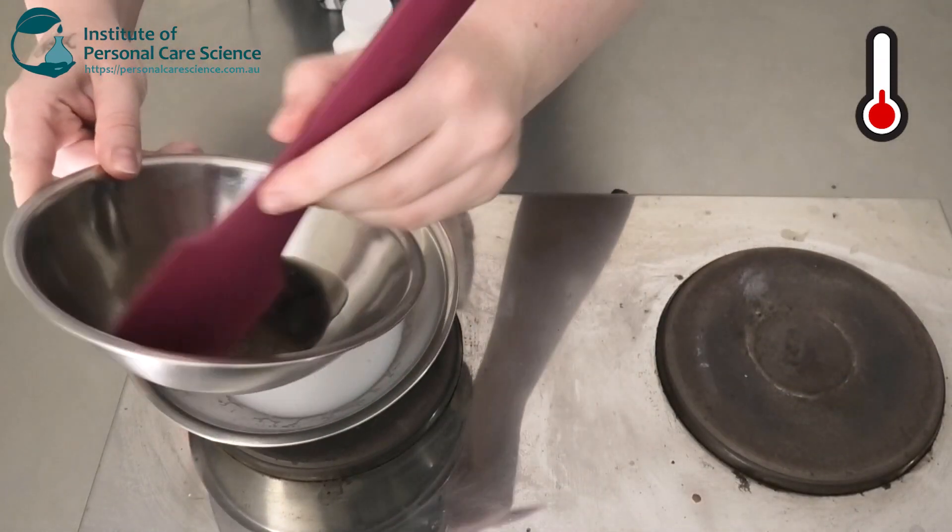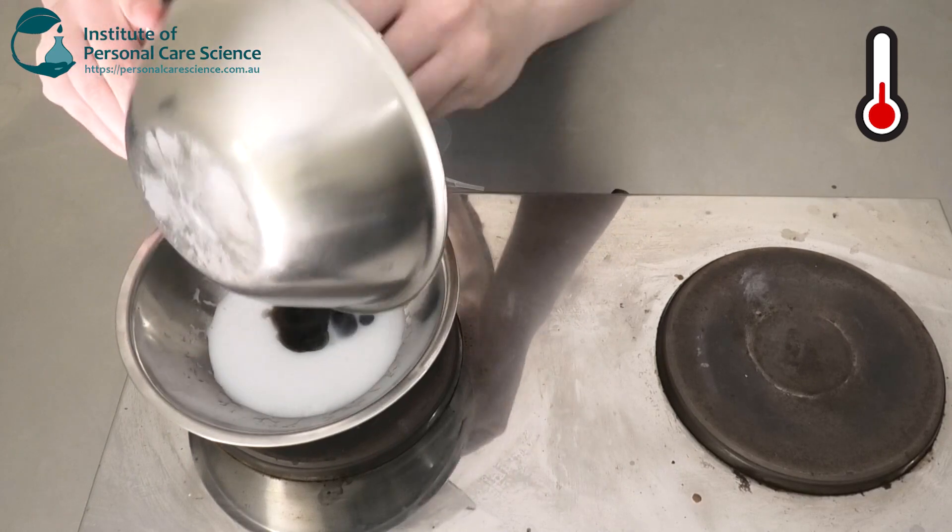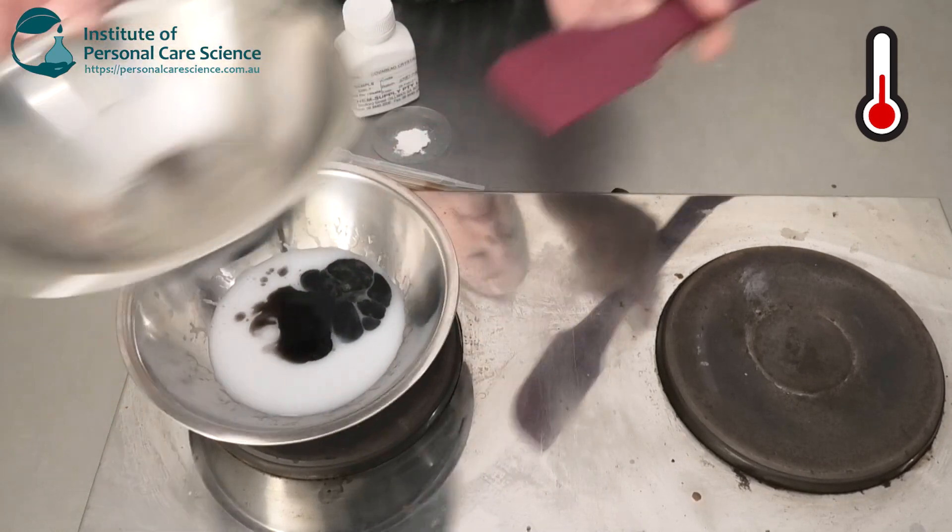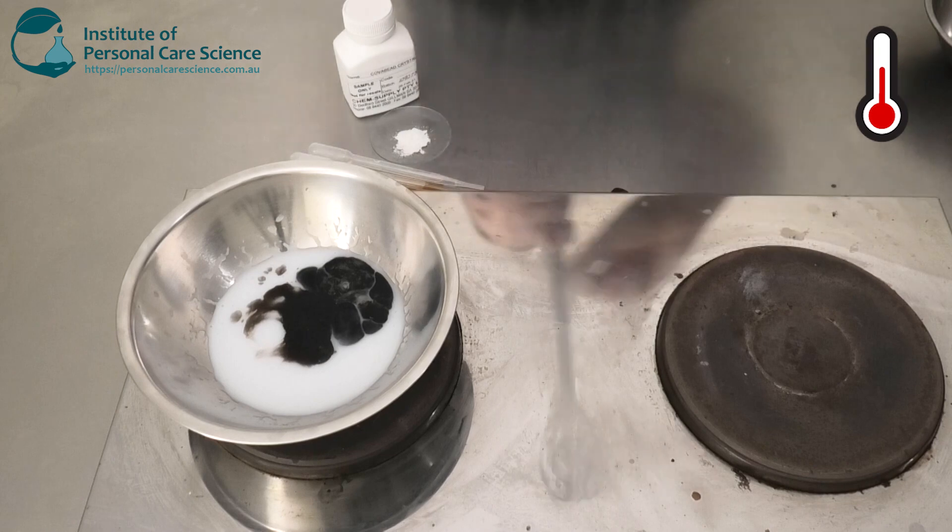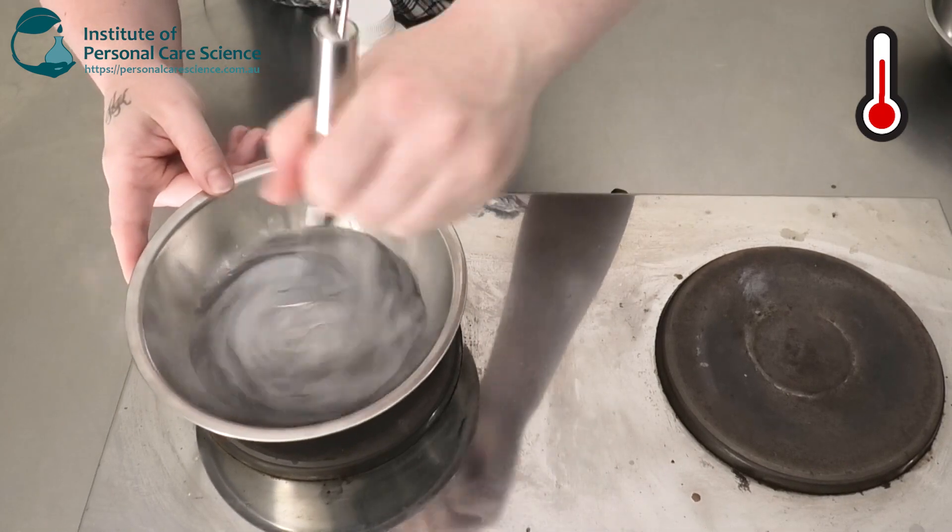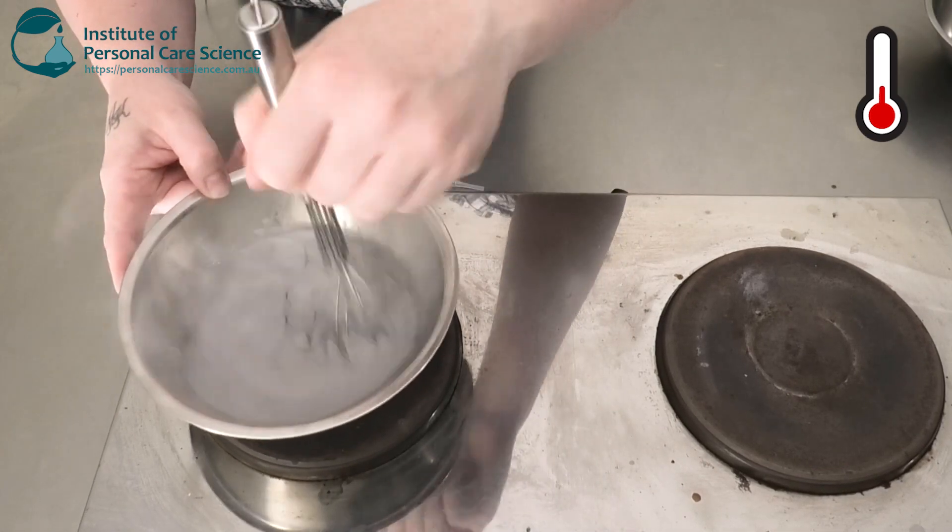Okay, once your water phase is nice and hot, we're going to add our oil phase straight to it. Give it a quick stir to combine it, and then we're going to pop it in a beaker and homogenize it.